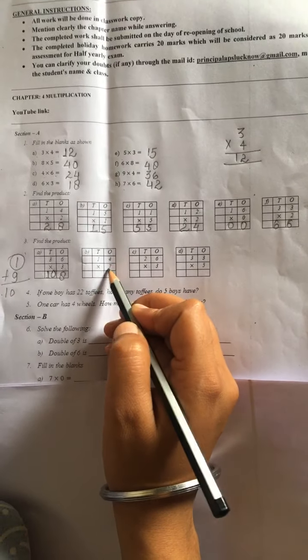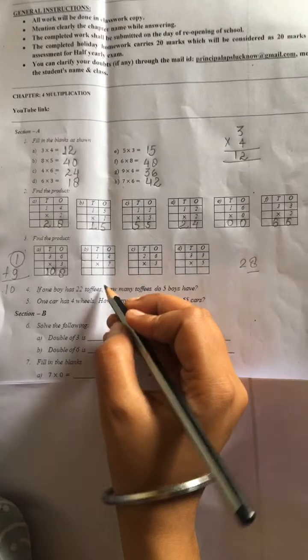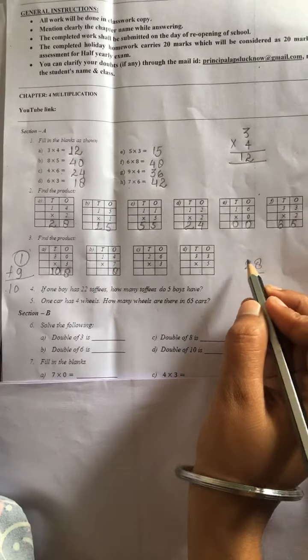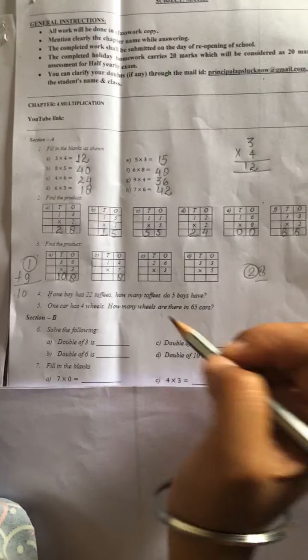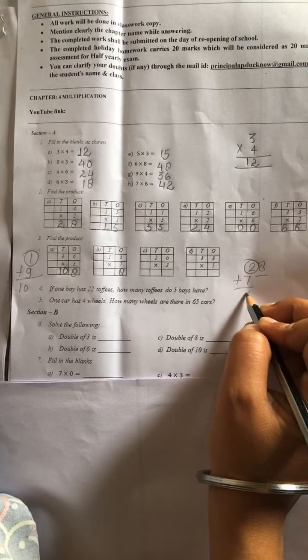Similarly, 7 times 4 is 28. Kitna hota hai? 28. To 8 ko hum yahan likhenge. Aur 2 hamara kya ho gaya? Carry. 7 times 1 is 7. 7 plus 2, 9.